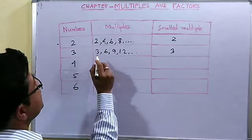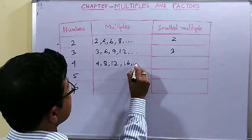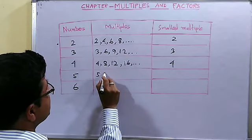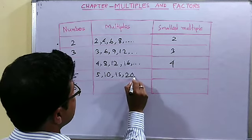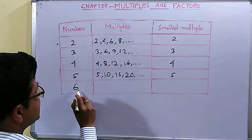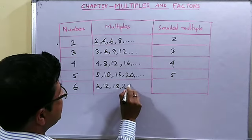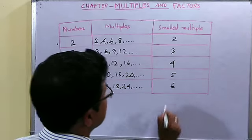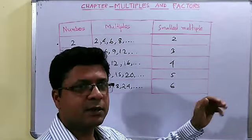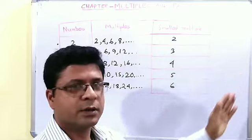Now for 4, the multiples are 4, 8, 12, 16 and it will go on. The smallest multiple is 4. Next, for 5: 5, 10, 15, 20 — the smallest multiple is 5. For 6: 6, 12, 18, 24. The smallest one is 6. So the smallest multiple of any number is the number itself and the largest is infinite — a very large, endless number.